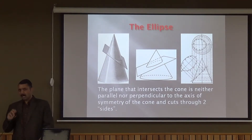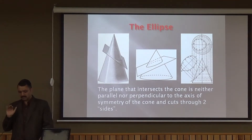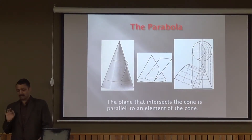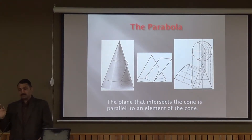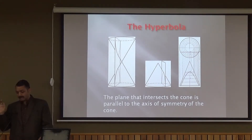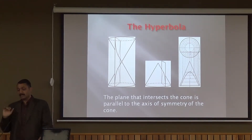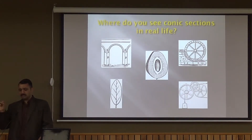Now coming to the ellipse: we get an elliptical figure when the cone is cut at a slight angle to the axis. Simply, the plane that intersects the cone is neither parallel nor perpendicular to the axis of symmetry of the cone, and cuts through both sides — the figure we get is an ellipse. For a parabola, the plane that intersects the cone is parallel to an element of the cone. For a hyperbola, the plane is parallel to the axis of symmetry of the cone and cuts both nappes — that figure is a hyperbola.